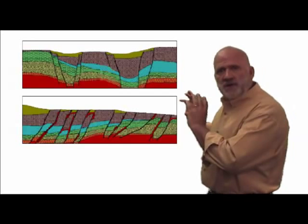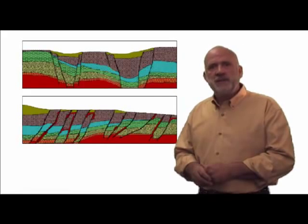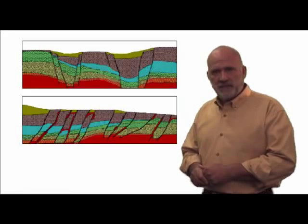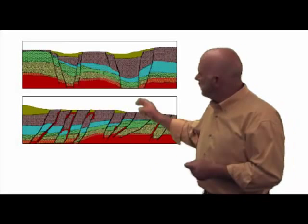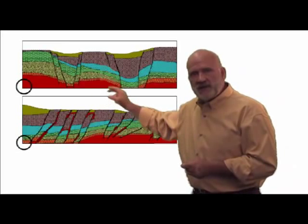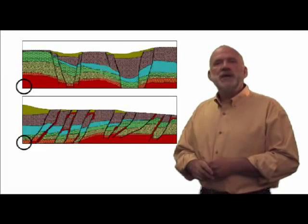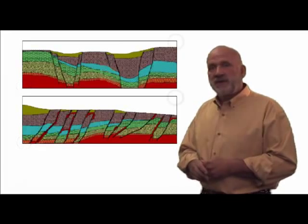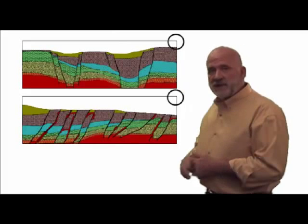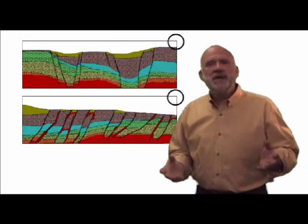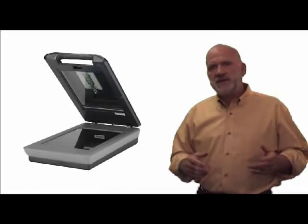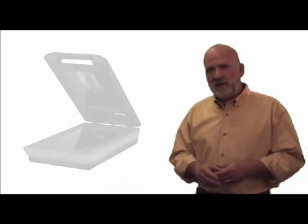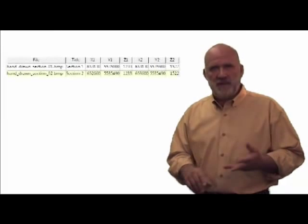Let's assume that we want to display these cross sections in their respective three-dimensional locations. The first step is to determine the XYZ coordinates for the lower left corner of each section. Next, we determine the XYZ coordinates for the upper right corner of each section. The next step is to scan this diagram using a flatbed or a self-feeding scanner, which will save the section in a raster format such as JPEG, TIFF, BMP, or PNG.